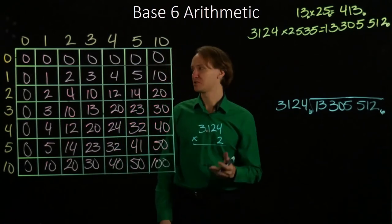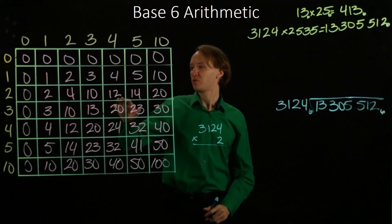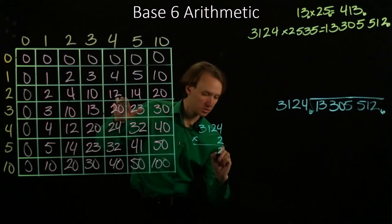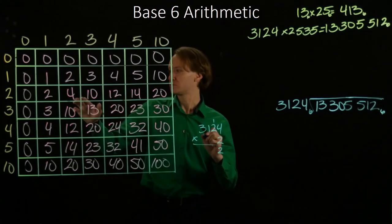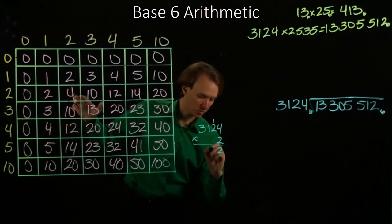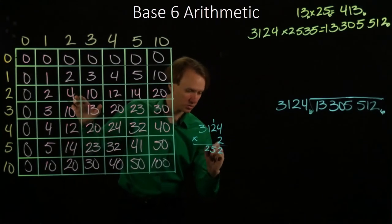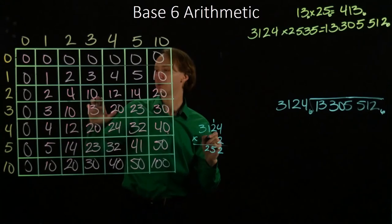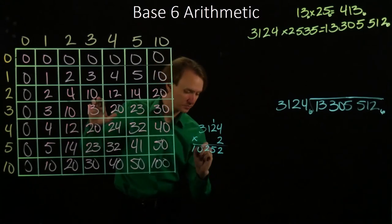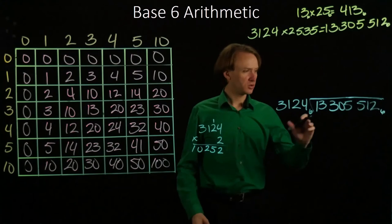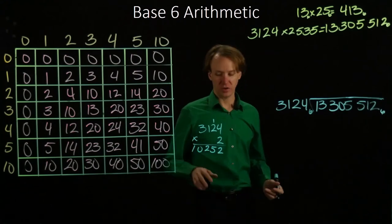So 3124 times 2. 2 times 4 is 12. 2 times 2 is 4, plus 1 is 5. 2 times 1 is 2. And 2 times 3 is 10. So that looks reasonably close to our 13,305.